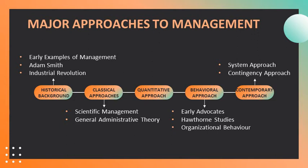There are four major approaches to management theory: classical, quantitative, behavioral, and contemporary. Looking at the historical background, we find early examples of management — for instance, Egyptian pyramids and the Great Wall of China. Similarly, Venetians, who used floating warship assembly lines, are early examples of management. In 1776, Adam Smith published The Wealth of Nations, in which he advocated the division of labor — meaning job specialization — to increase worker productivity. The Industrial Revolution, during the late 18th century, substituted machine power for human labor, making it possible to produce goods economically at factories.